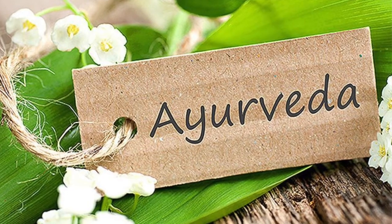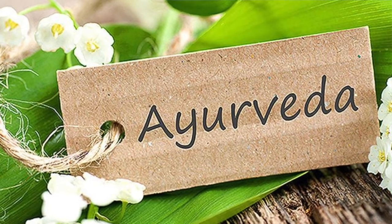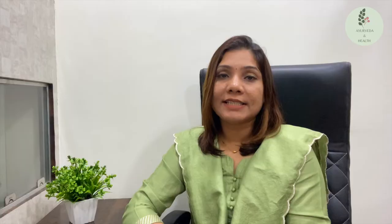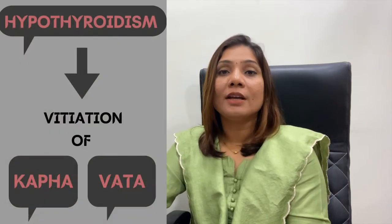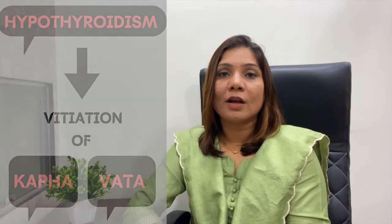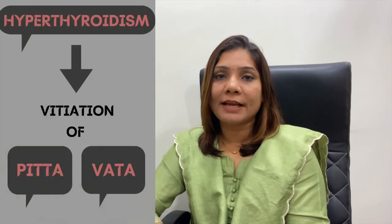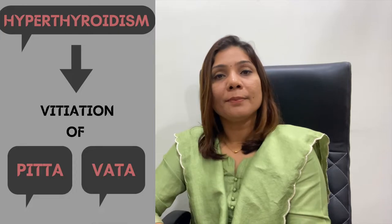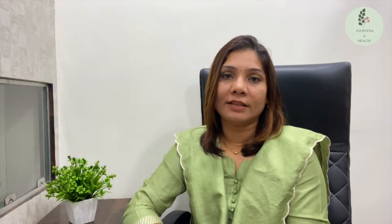From an Ayurvedic shastra perspective, it is observed that in hypothyroidism, kapha and vata dosha symptoms are predominant, while in hyperthyroidism, pitta dosha symptoms are predominant.